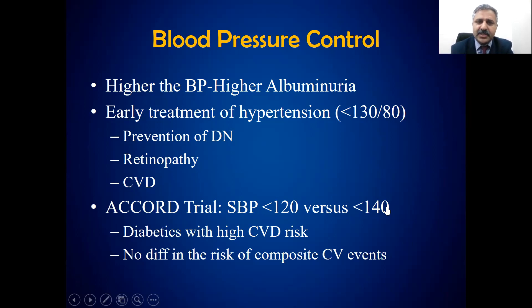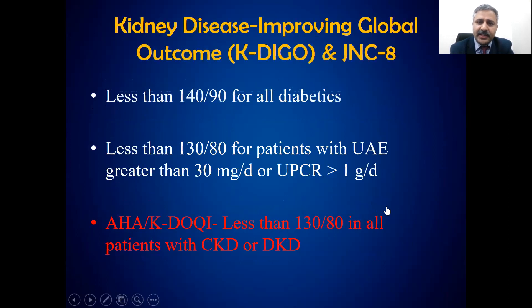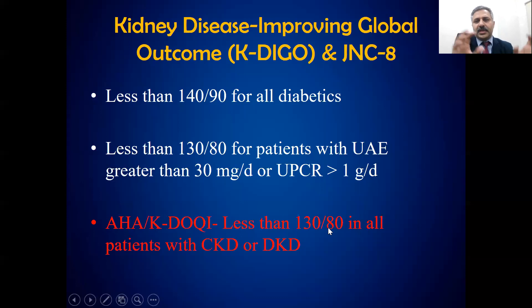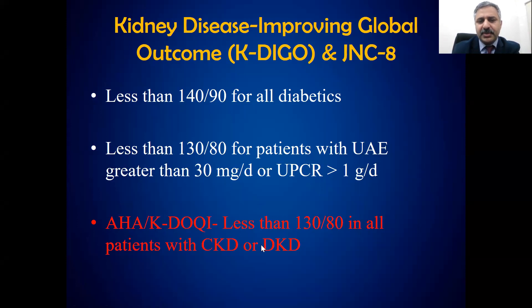There is no benefit of intensive blood pressure control as per the ACCORD trial, especially in diabetics. SPRINT did show benefit, but that was in non-diabetics. KDIGO, JNC, and KDOQI recommend blood pressure less than 130/80 to decrease the progression of kidney disease — and this is the guideline supported by the American Heart Association.